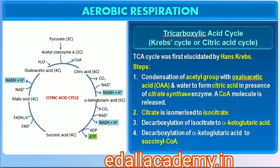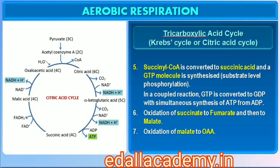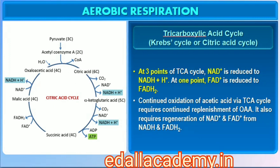Citrate is then isomerized to isocitrate. It is followed by two successive steps of decarboxylation, leading to the formation of alpha-ketoglutaric acid and then succinyl-CoA. In the remaining steps of the citric acid cycle, succinyl-CoA is oxidized to OAA, allowing the cycle to continue. During the conversion of succinyl-CoA to succinic acid, a molecule of GTP is synthesized — this is substrate-level phosphorylation. GTP is then converted to GDP with simultaneous synthesis of ATP from ADP. There are three points where NAD+ is reduced to NADH + H+, and one point where FAD+ is reduced to FADH2.